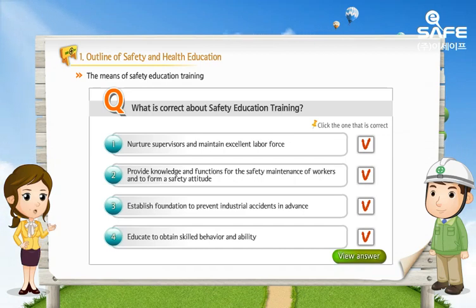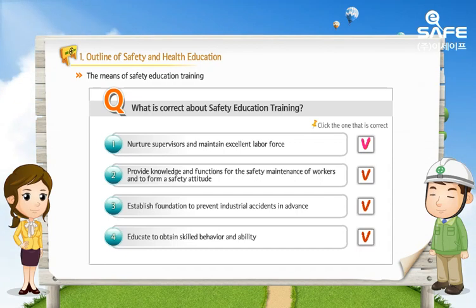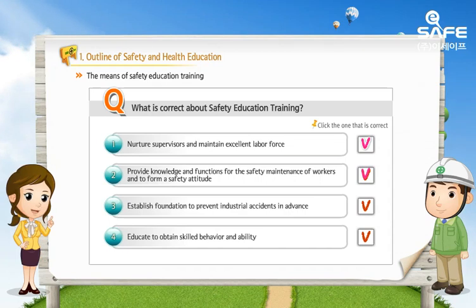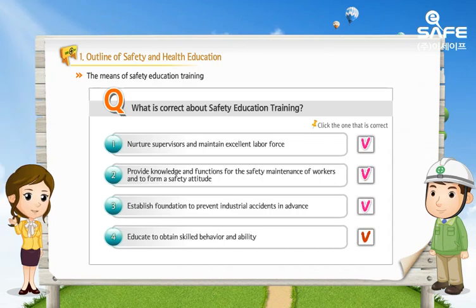Everything explaining about safety education training is correct. Safety education and training is used to nurture supervisors who are the driving force of business development and to maintain excellent labor force. It is also carried out to provide knowledge and functions for the safety maintenance of workers and to form a safety attitude. It directs the company to carry out intended production smoothly and efficiently by making a commitment to prevent industrial accidents in advance.